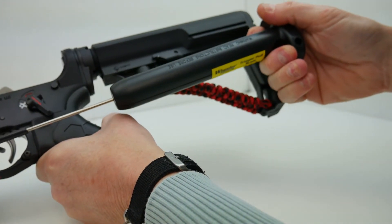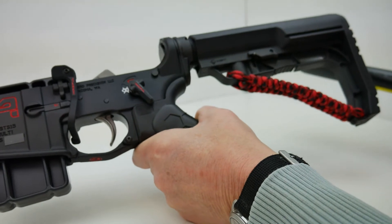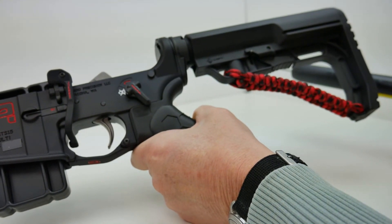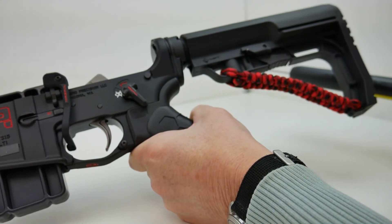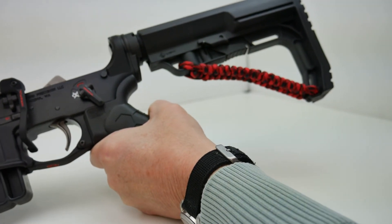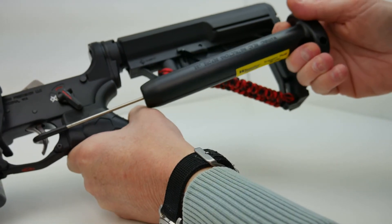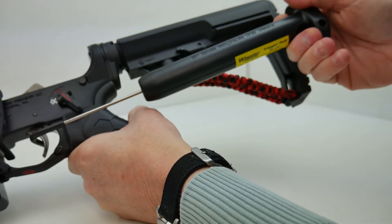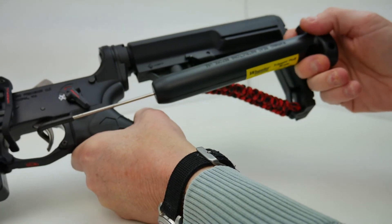Now this trigger I'm working on here, this is the Bravo Company PNT trigger. This should have a six pound give or take trigger pull. So for this to tell me seven pounds, that would be kind of out of the ordinary.